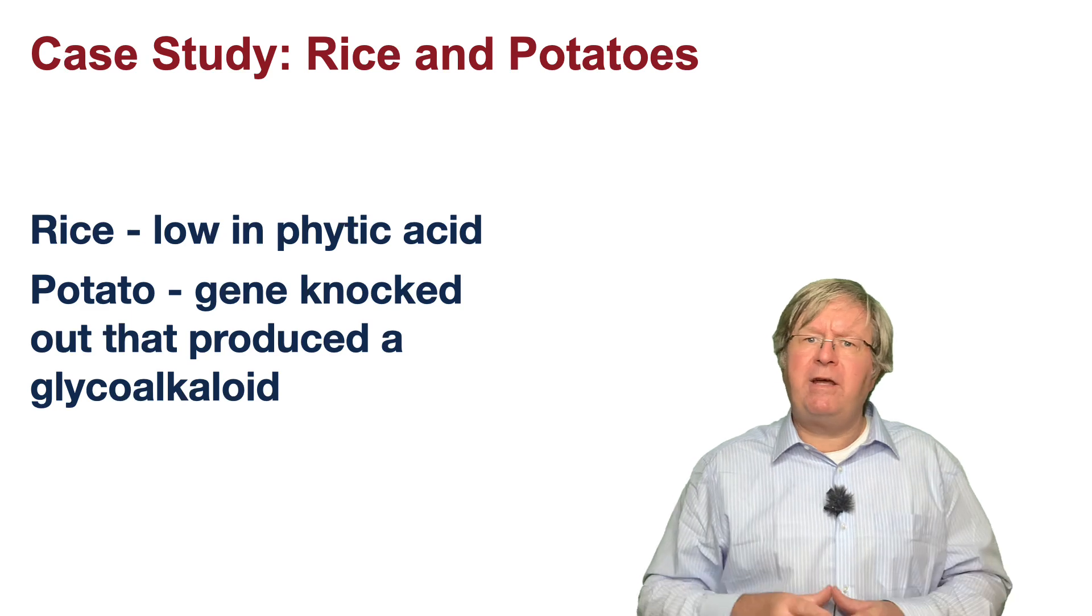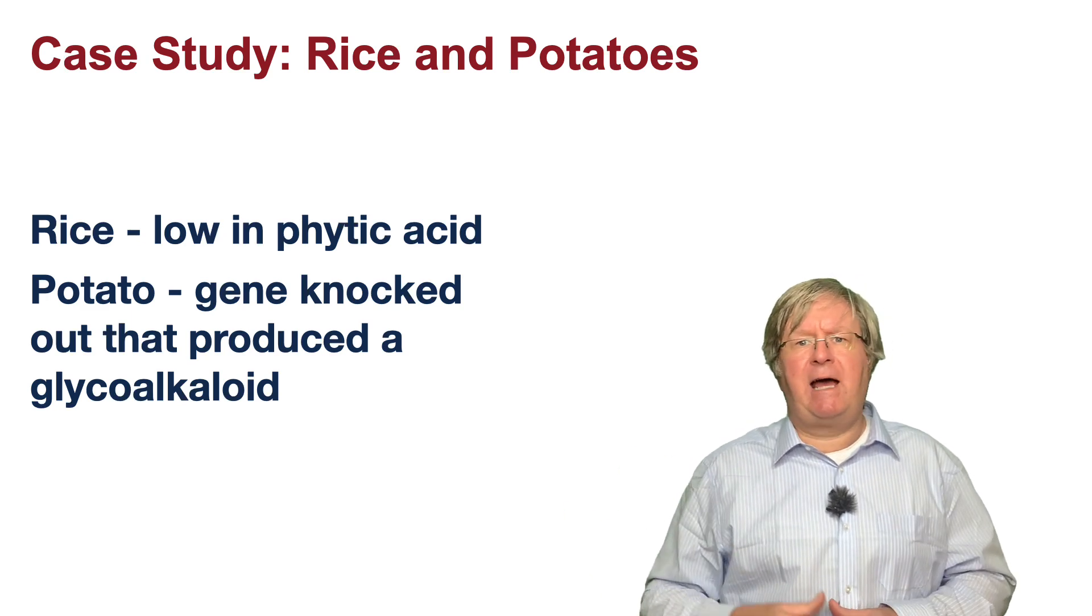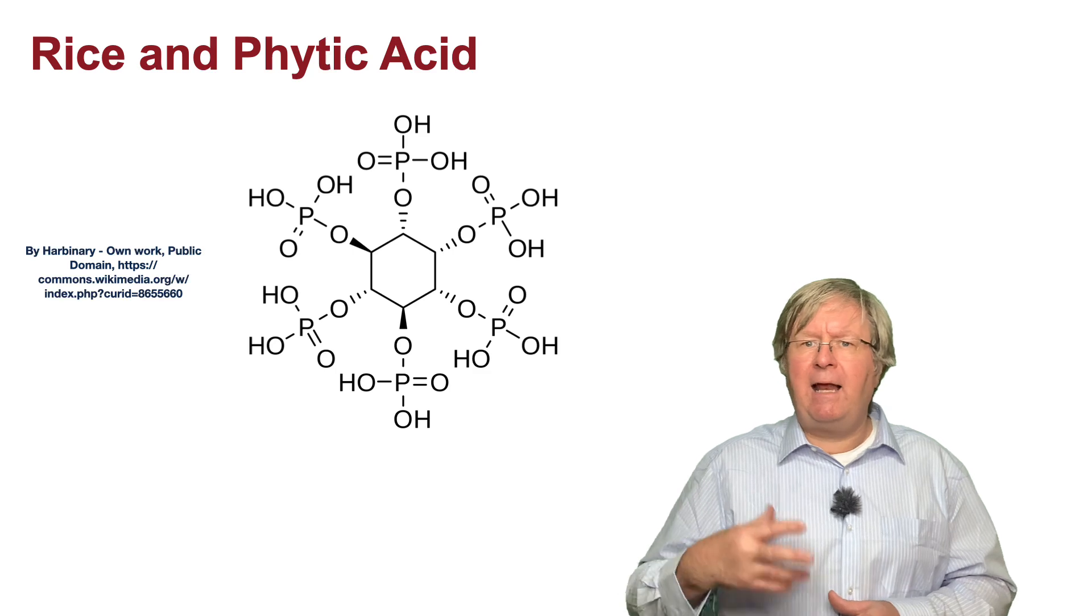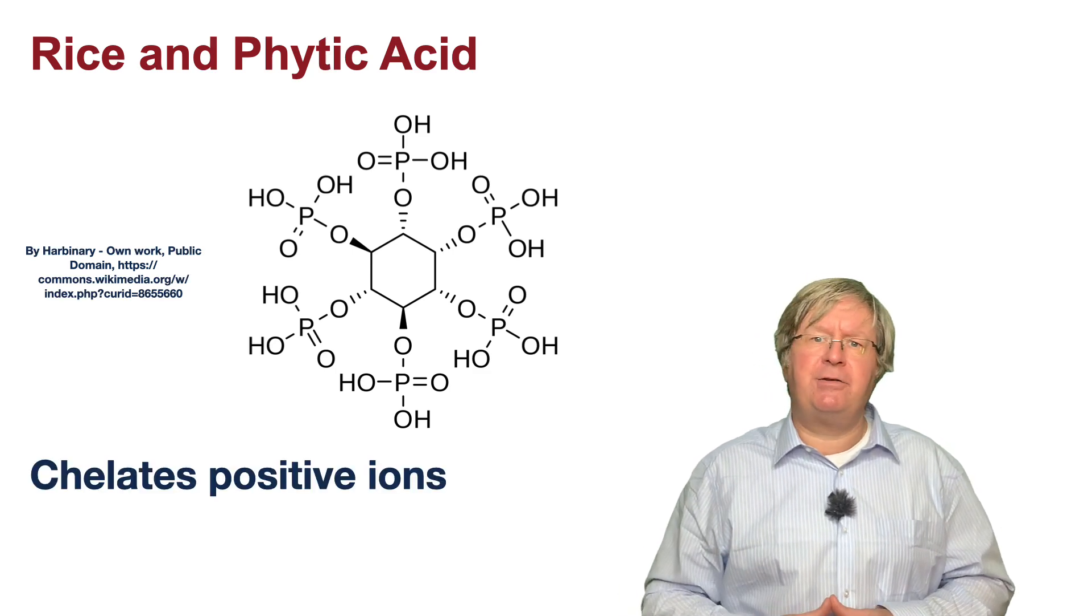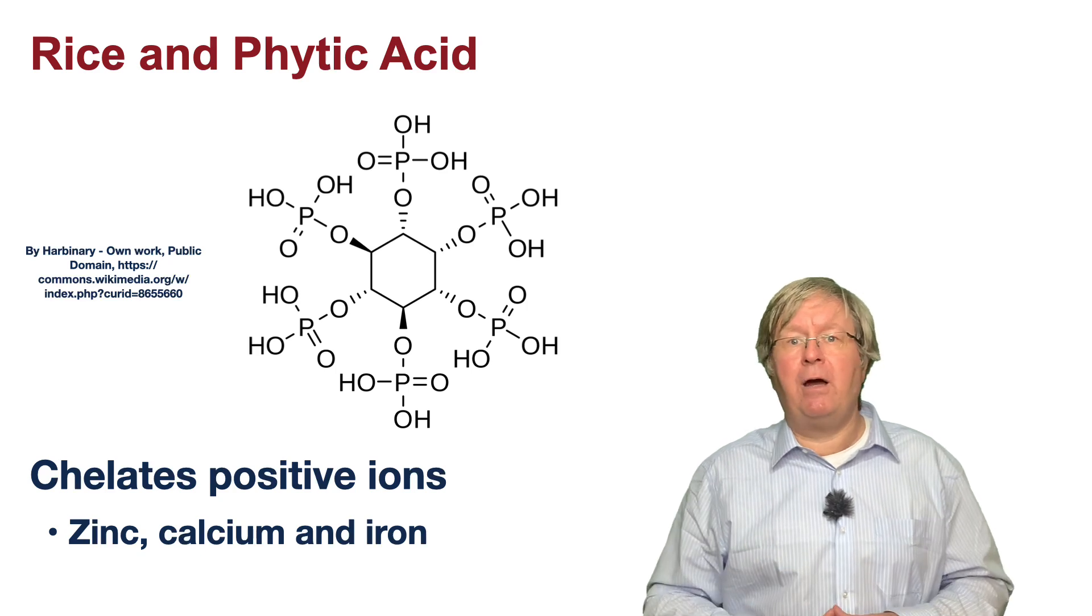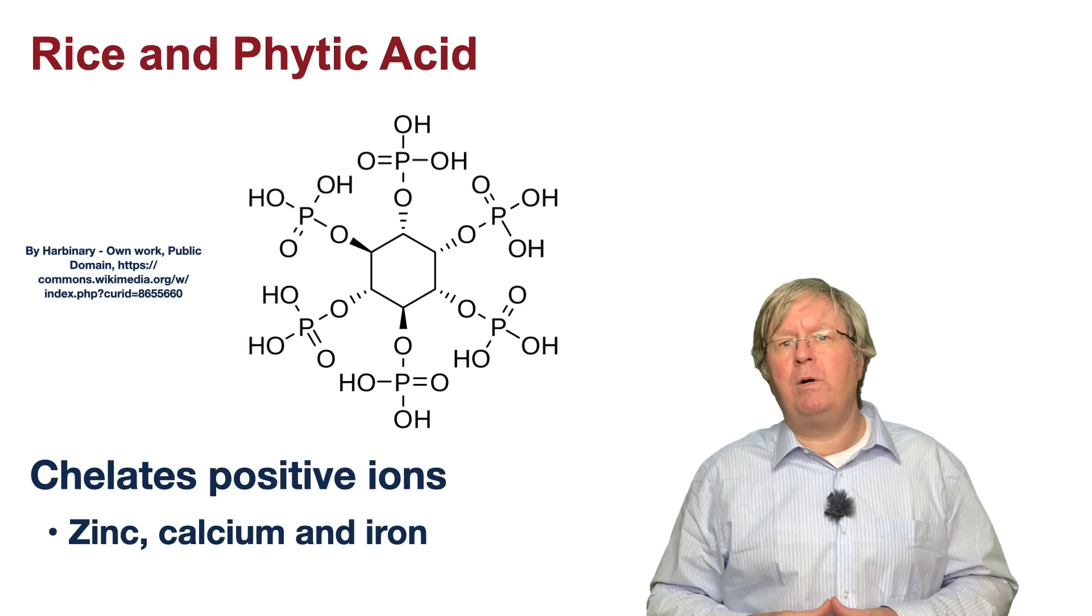So why were we concerned about phytic acid and a glycoalkaloid? Well, phytic acid can chelate positively charged ions such as zinc, calcium, and iron, and a lack of iron in the diet can lead to anemia, which affects one in four people worldwide.